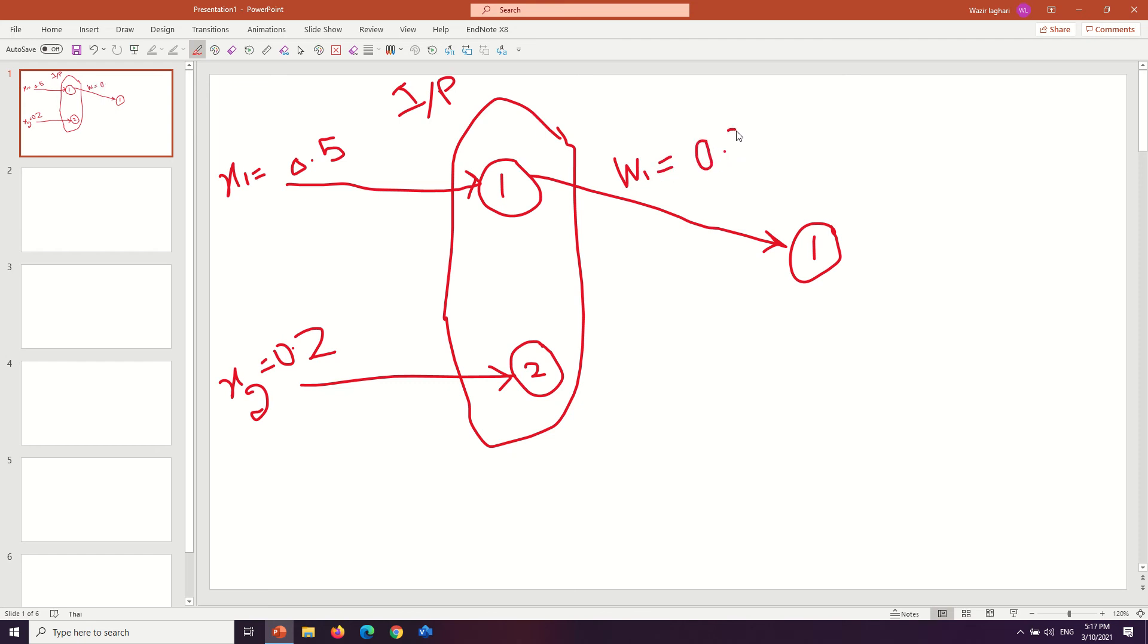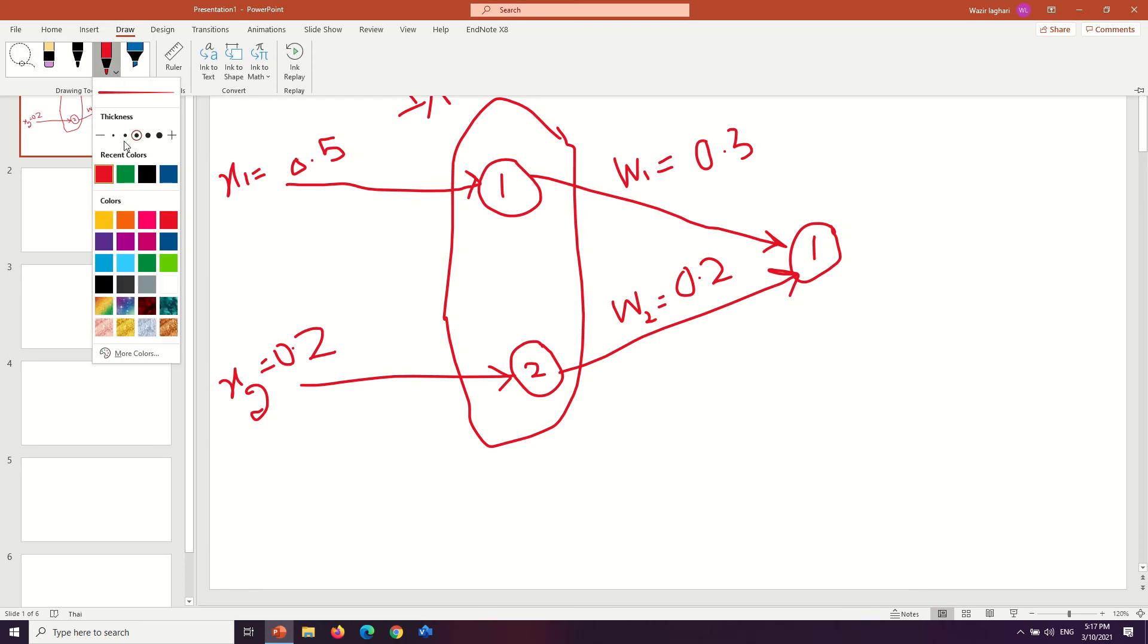Similarly, the weight of the second input, w2, is equal to 0.2. So how do we solve this neural network with two inputs and one output? We apply a linear operation. In this case we only focus on linear, not nonlinear function.